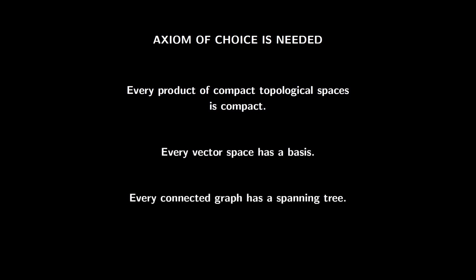So here is the answer to why we need to specify if this axiom is needed in a proof: it is mathematically interesting to know. For many results, we don't need this axiom at all. For some results, we need to assume it. Tychonoff's theorem — perhaps the most important theorem of topology — saying that every product of compact topological spaces is compact, needs it. We are talking here about infinite products with product topology, not box topology. Every vector space has a basis is another example. Every connected graph has a spanning tree is yet another example. For finite vector spaces or finite graphs, we do not need the axiom of choice.